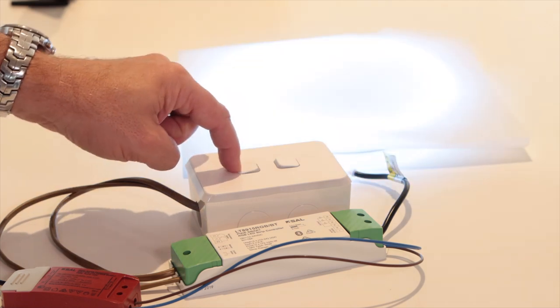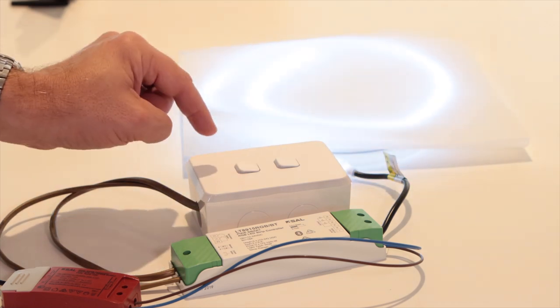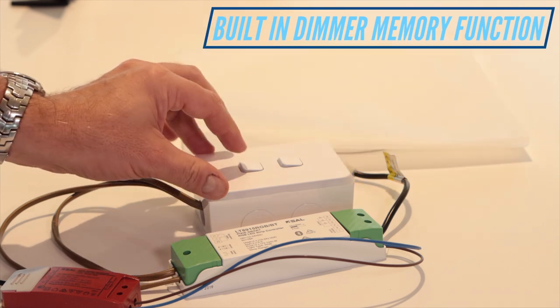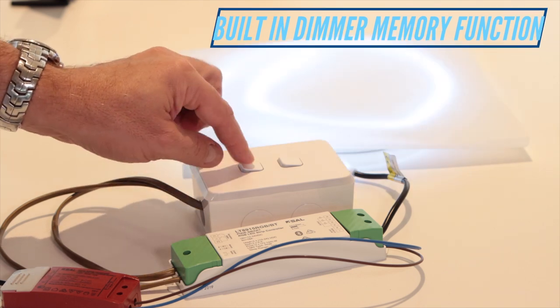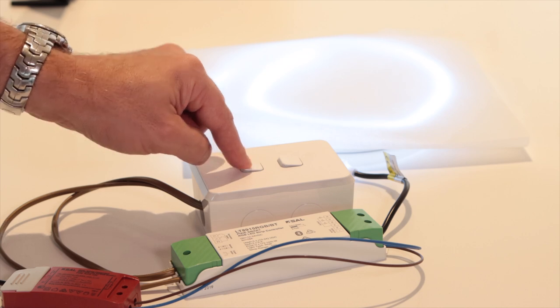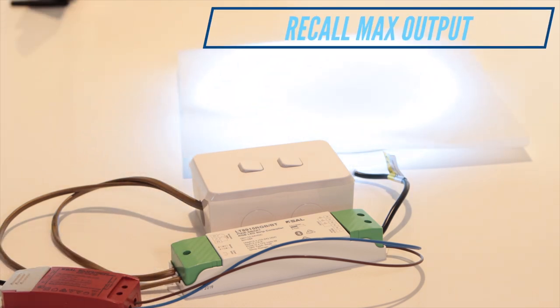If I turn it on and then dim it down and then turn it off at that level, it will return on at that level. And if I want to immediately go to maximum I can double tap it and it will immediately go to full.